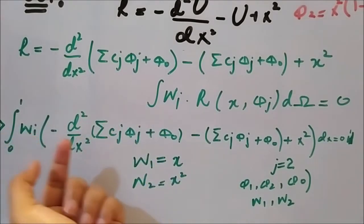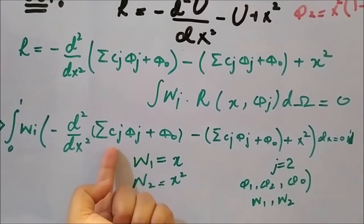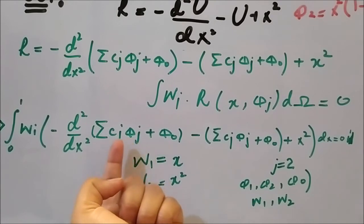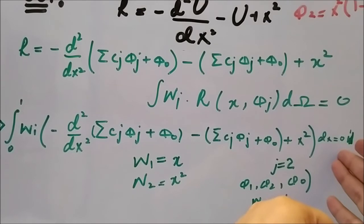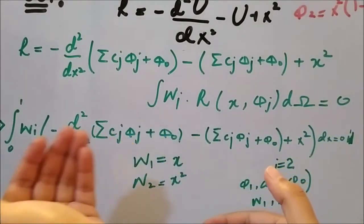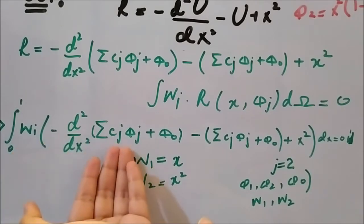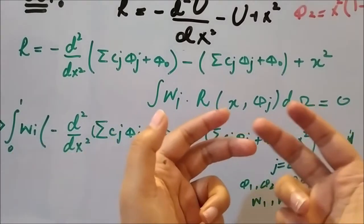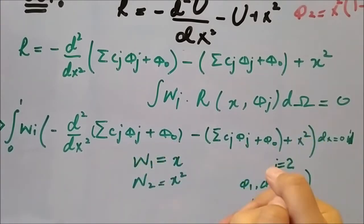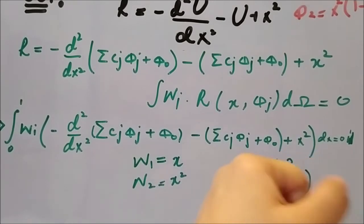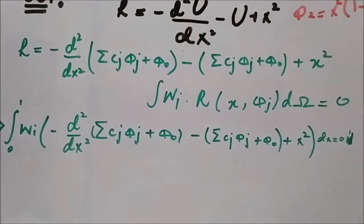We now have two integrals. The first is: ∫₀¹ w_1 · [-d²(c_1φ_1 + c_2φ_2 + φ_naught)/dx² - (c_1φ_1 + c_2φ_2 + φ_naught) + x²] dx = 0. The second uses w_2 in place of w_1. Solving these two integrals will give a system of two equations in two unknowns c_1 and c_2.